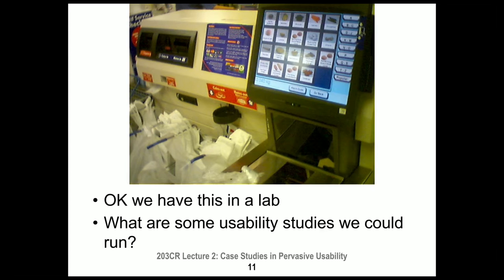We could put a checkout machine in a lab and run usability studies — asking a user to find a bread roll on the menu and determine its cost. But if we want to check how this thing works in real life, we need to know how it supports the entire activity of paying for shopping. Usability in life means thinking about an entire activity and observing people going through the entire process to identify problems.